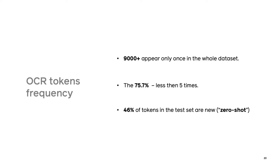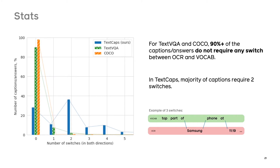Our TextCaps dataset is also very diverse and contains a lot of unique tokens. More than 9,000 tokens appear only once in the whole dataset, while 75% appear less than 5 times. And even in the test set, roughly half of the tokens appear for the first time, which means it is a challenging zero-shot scenario. We have evaluated the technical complexity of our data and found that the majority of captions require at least two switches between OCR and vocabulary, which creates a significant difference with COCO and even TextVQA.